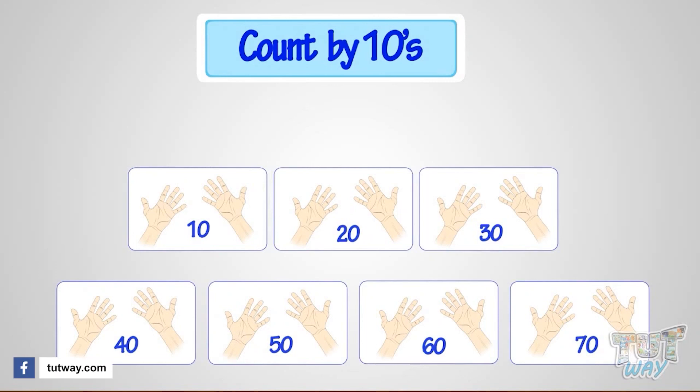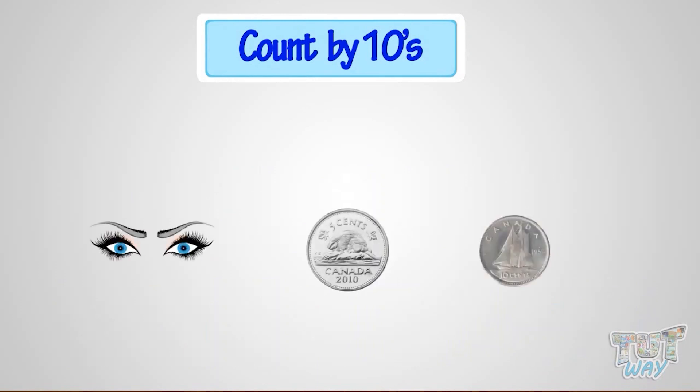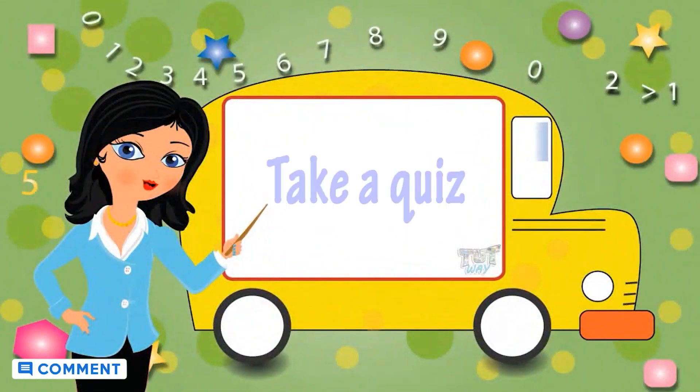So we have learned how we can count things by grouping them in groups of two, five, or ten. And count faster by this way of skip counting. Now go ahead and take a quiz to learn more! Bye-bye!